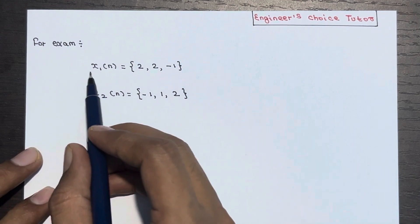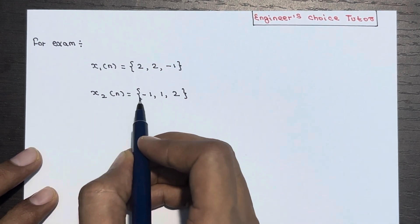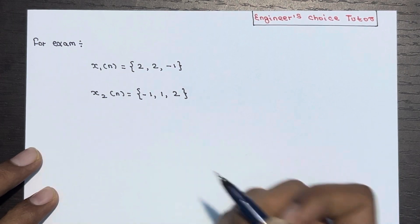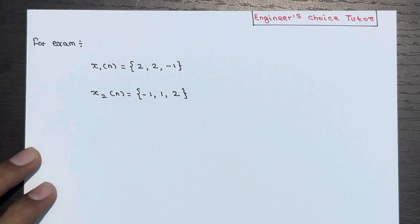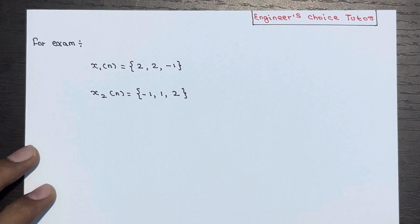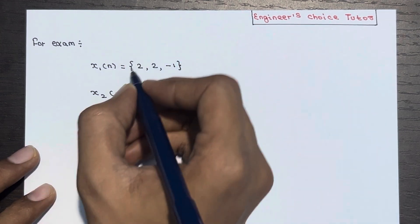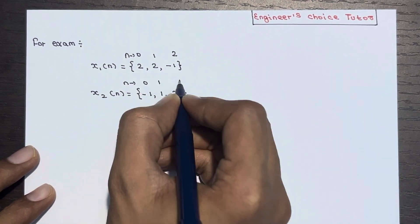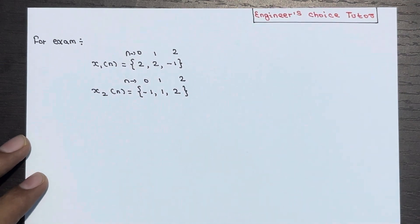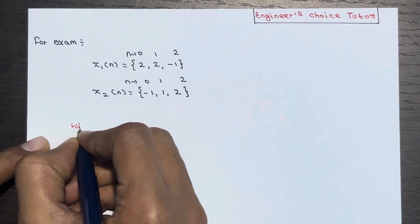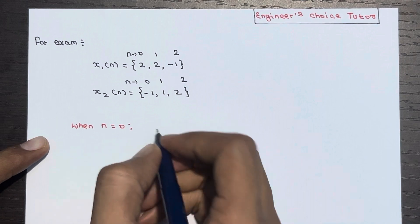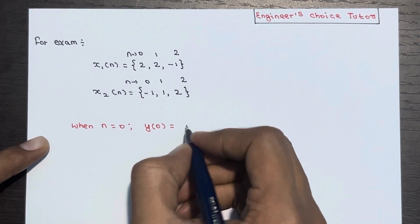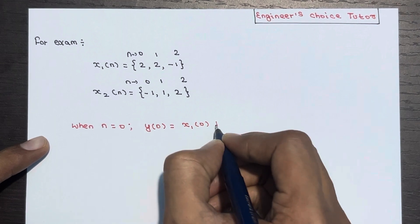Suppose we have x1(n) equal to {2, 2, -1} and x2(n) equal to {-1, 1, 2} — sequence representations of the two signals. We want to find the addition. The index n is equal to 0, 1, 2 for both signals. When n equal to 0: y(0) equals x1(0) plus x2(0).